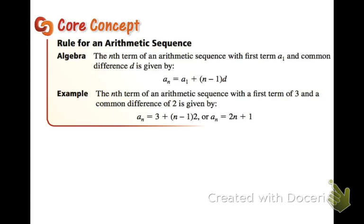The formula that we're going to use for arithmetic formulas is a sub n equals a sub 1, which means your first term, and then in parentheses, n minus 1 times d. Now, if I were you, I would write it like this, so that whenever you need to distribute, it's in the front.